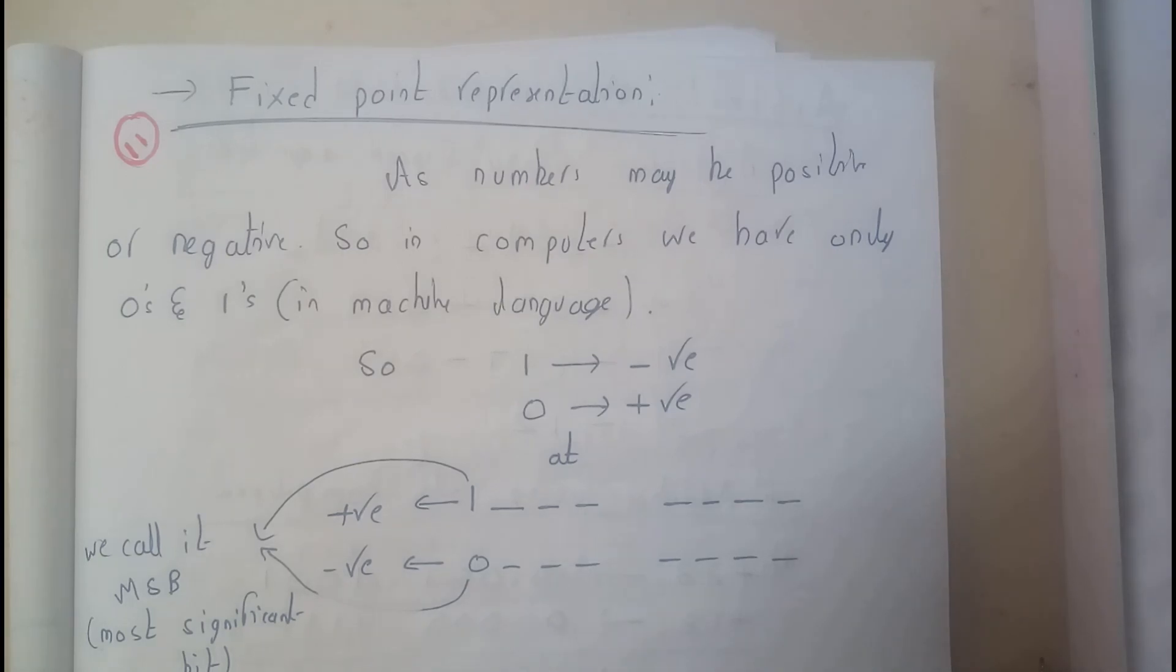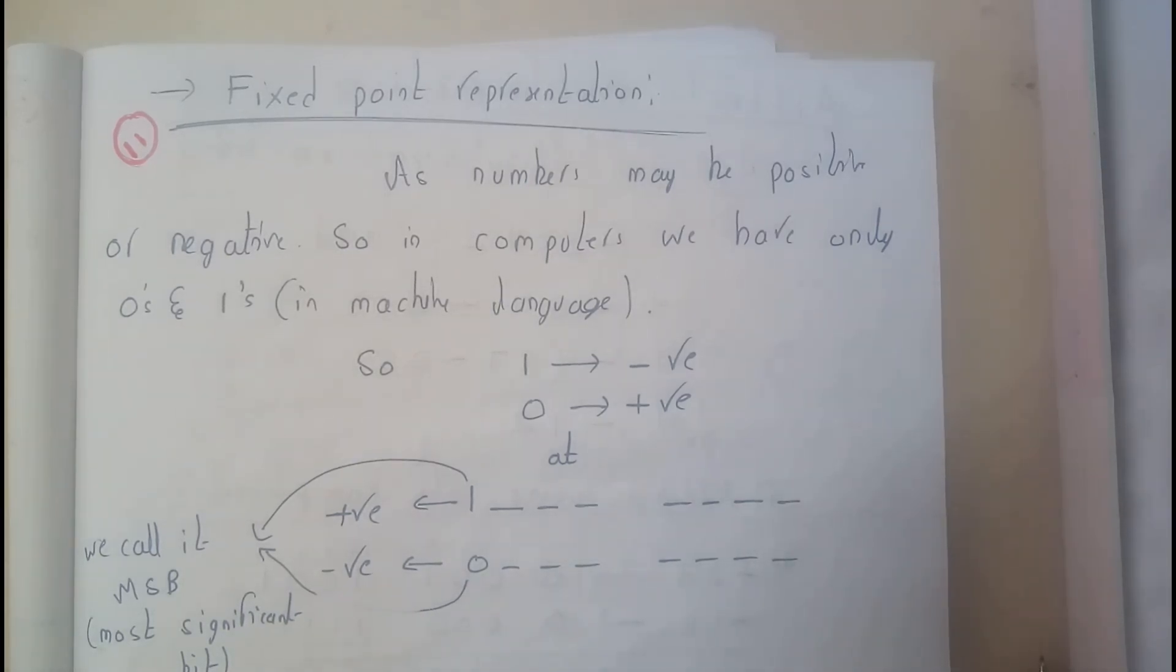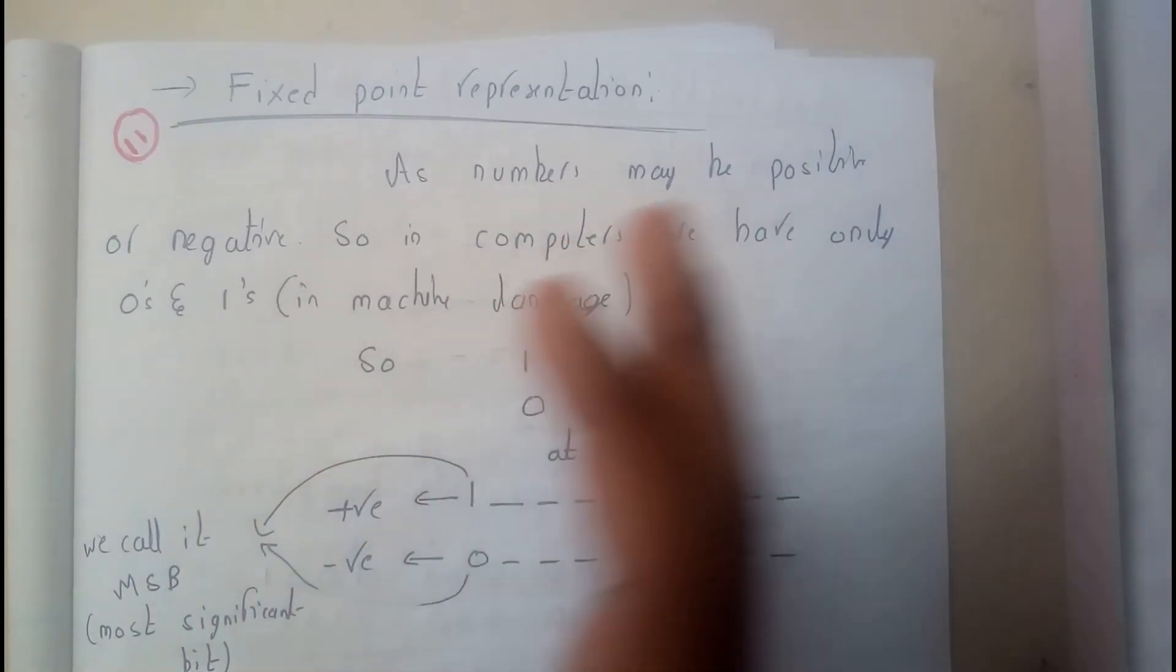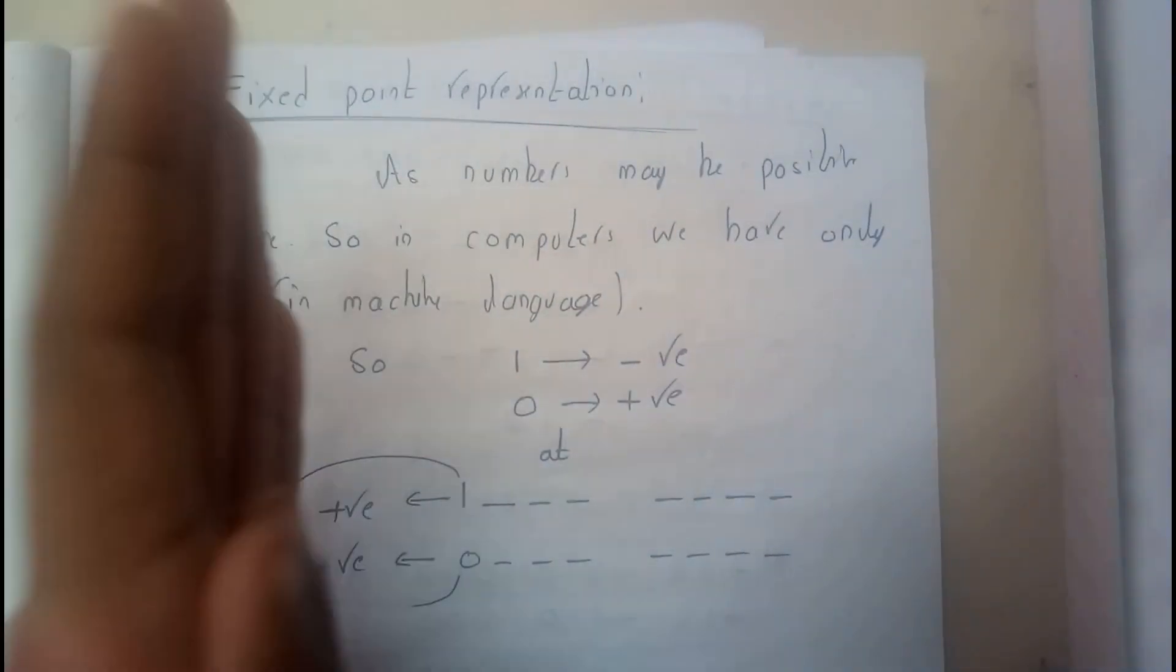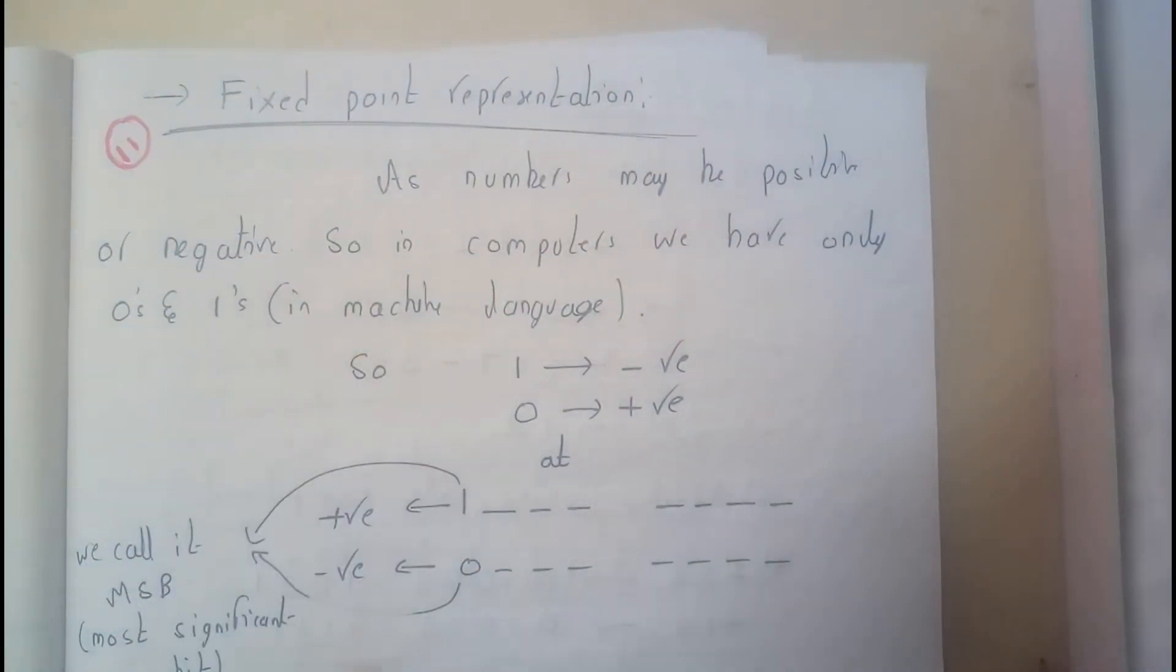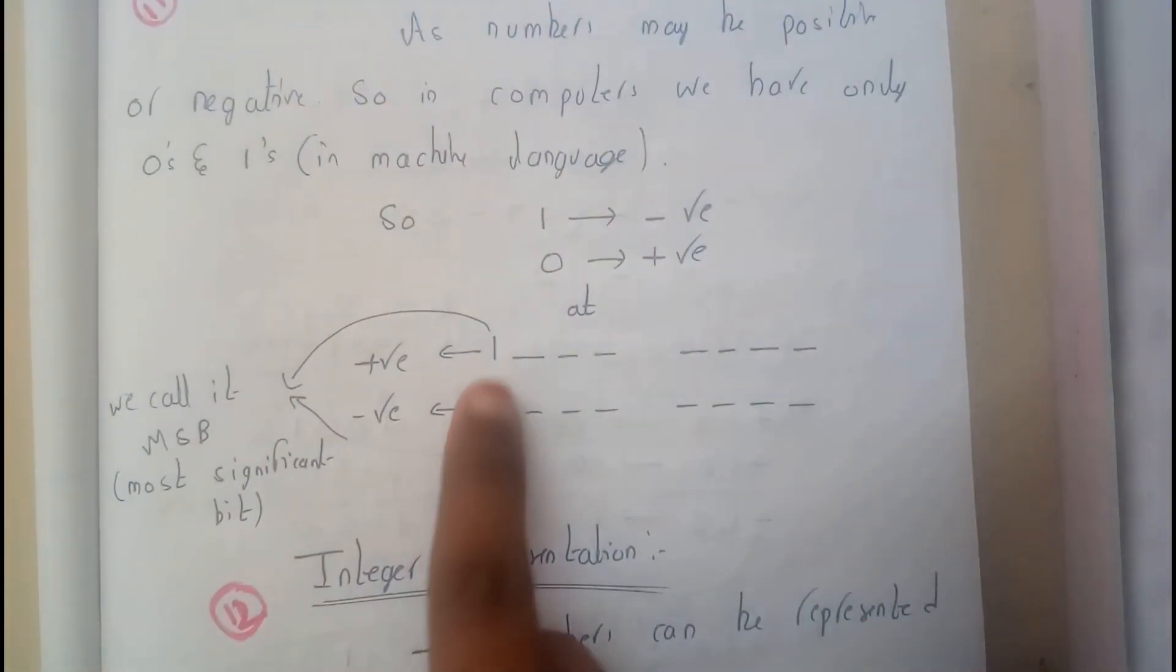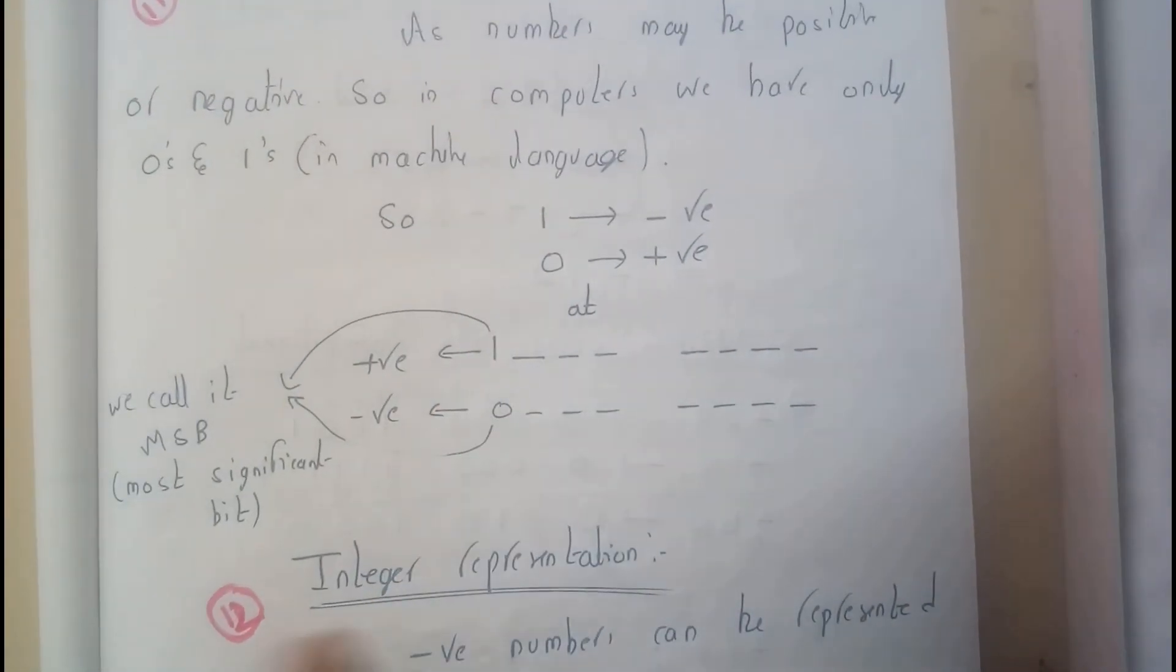Basically by seeing the MSB, that is nothing but the most significant bit guys, that is nothing but the leftmost bit. If it is one, it is negative. If it is zero, it is positive. So this position we call as MSB.